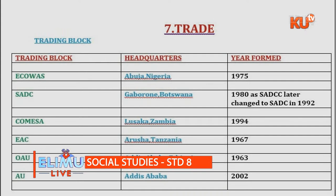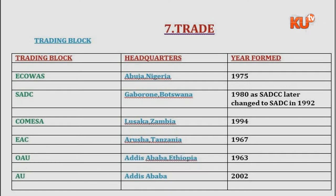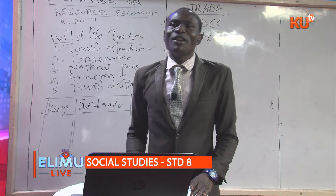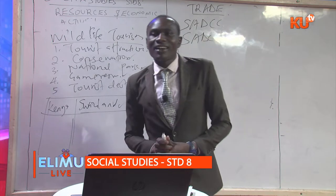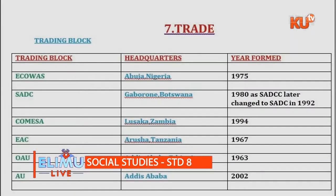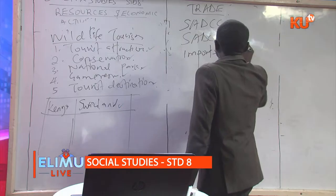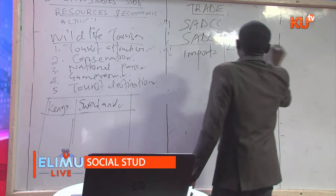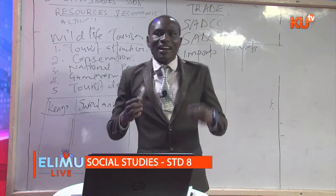TV quiz: which one of the following is not a member state of SADC? As a candidate, you should be able to know the member states of ECOWAS, SADC, COMESA, EAC, OAU, and AU. On trade, you should also be able to know Kenya's imports and Kenya's exports — what do we import as a country and what do we export as a nation?